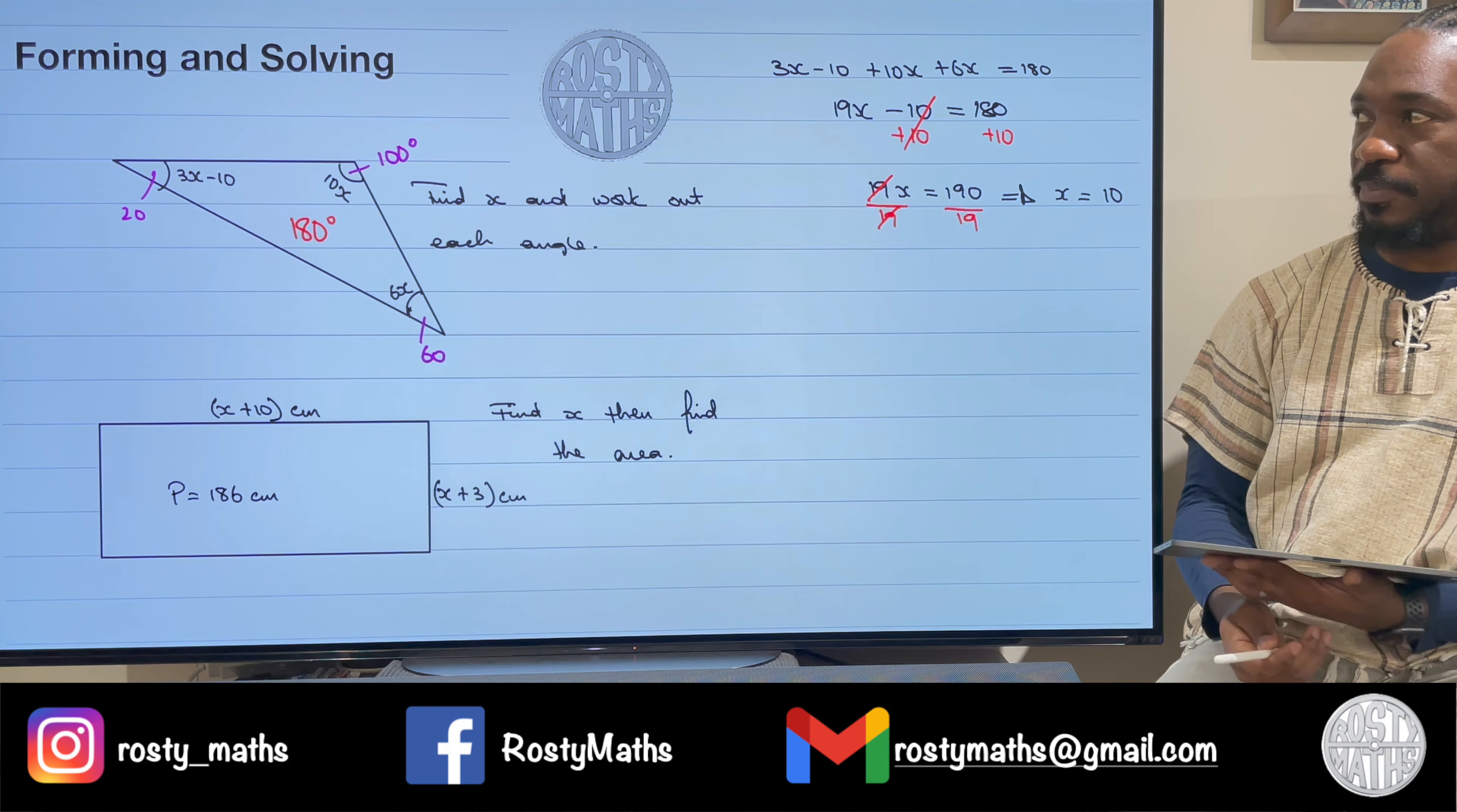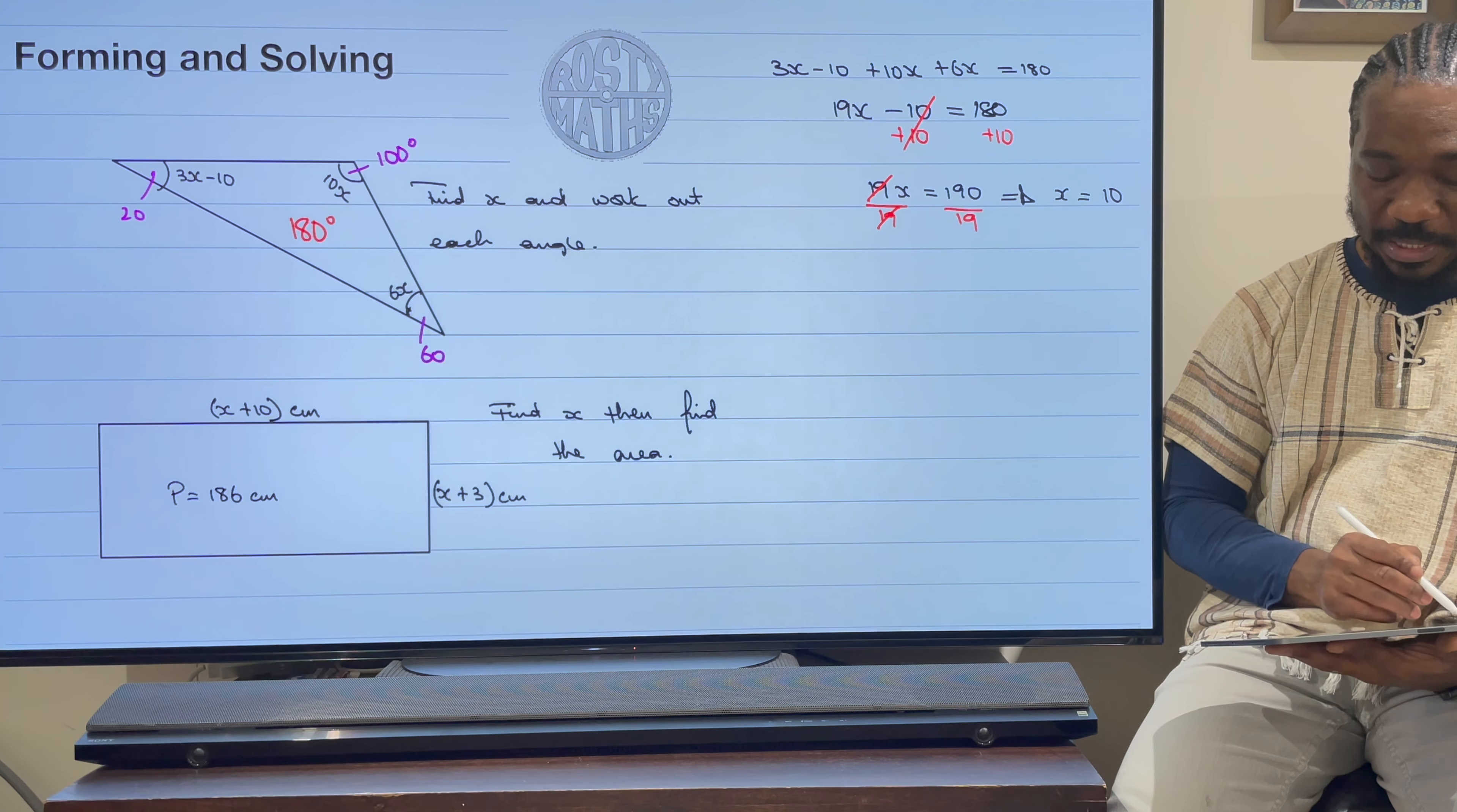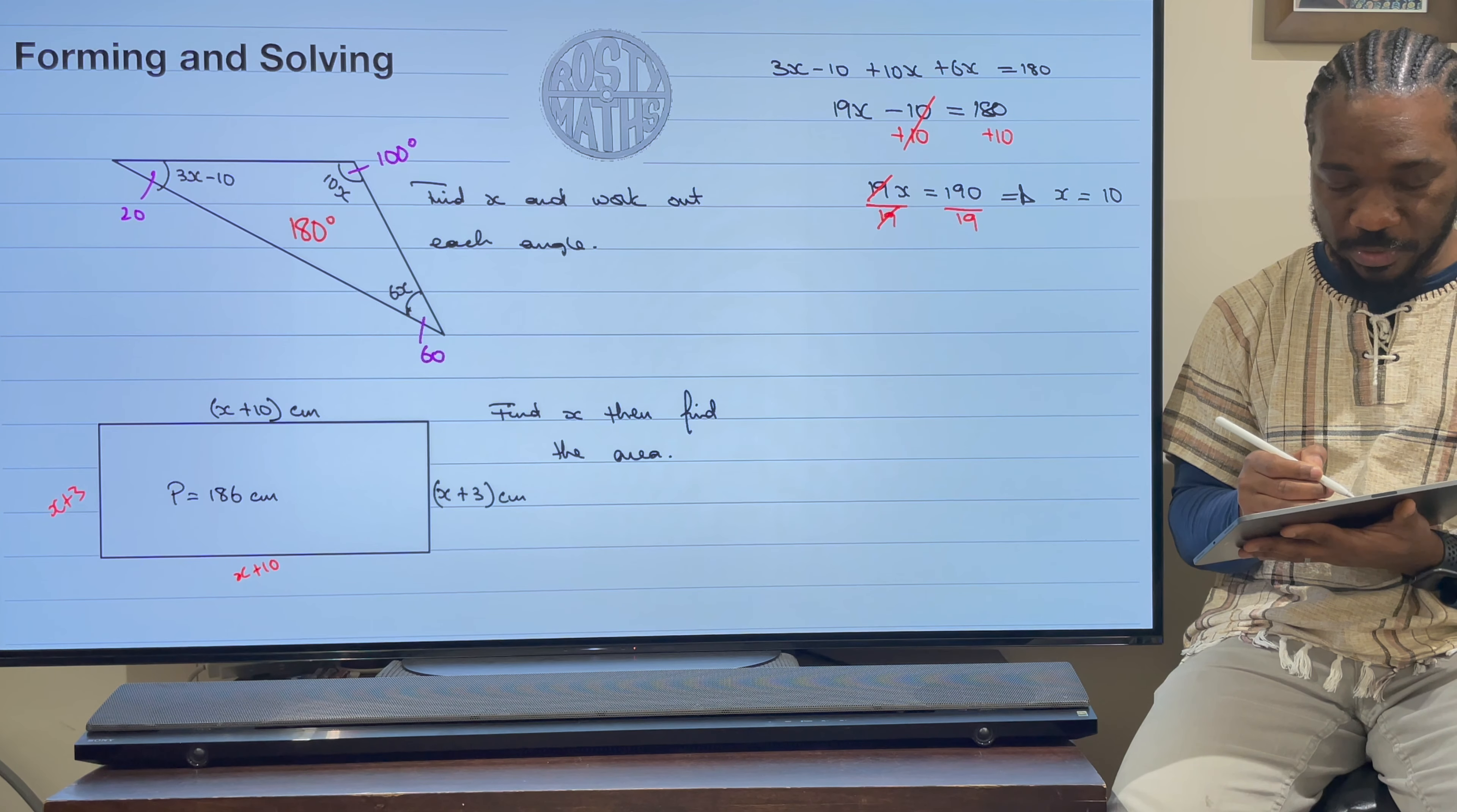Let's do this last question here because this video I want to keep it as short as possible. In this question, same sort of thing: find x first and then find the area of this rectangle. Now what information have they given me? Well, they've given me the length, they've given me the width, and they've told me that the perimeter is 186. That's really useful information because we know that perimeter means add all of the sides. And because this is a rectangle, it means that this side is also x add 3 and this side is also x add 10.